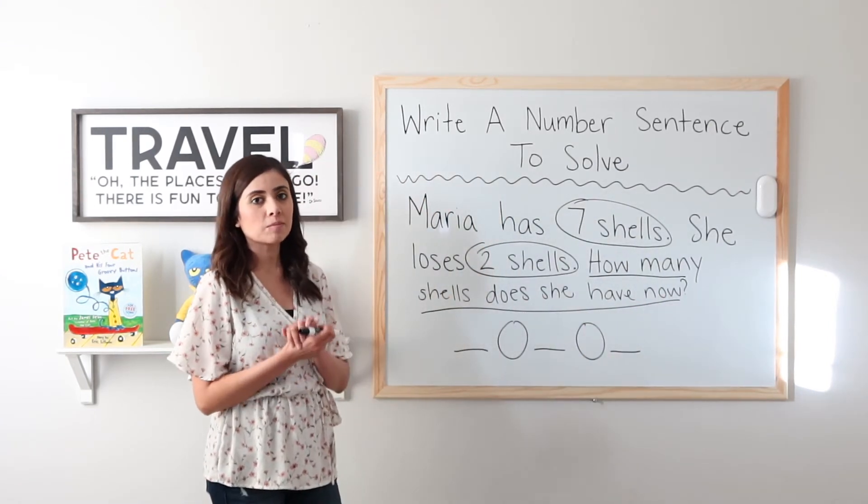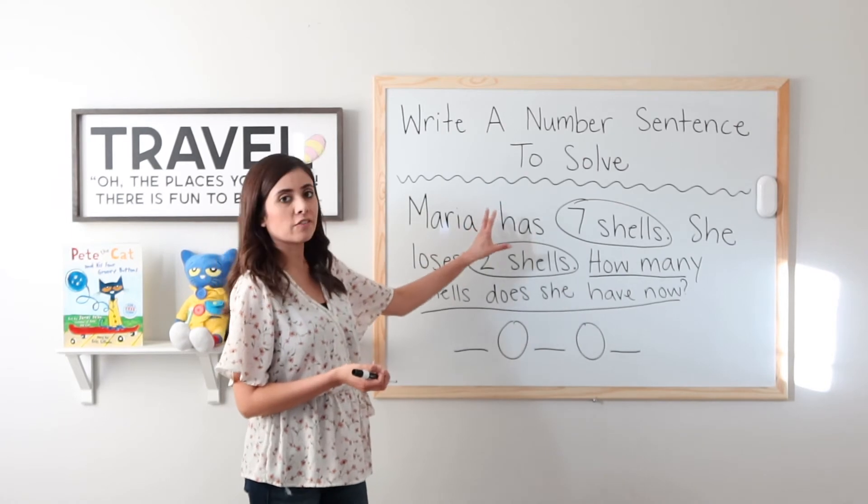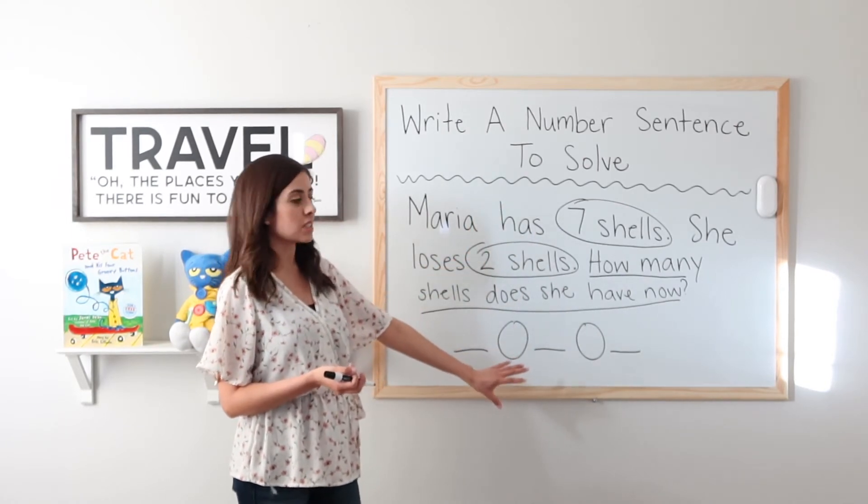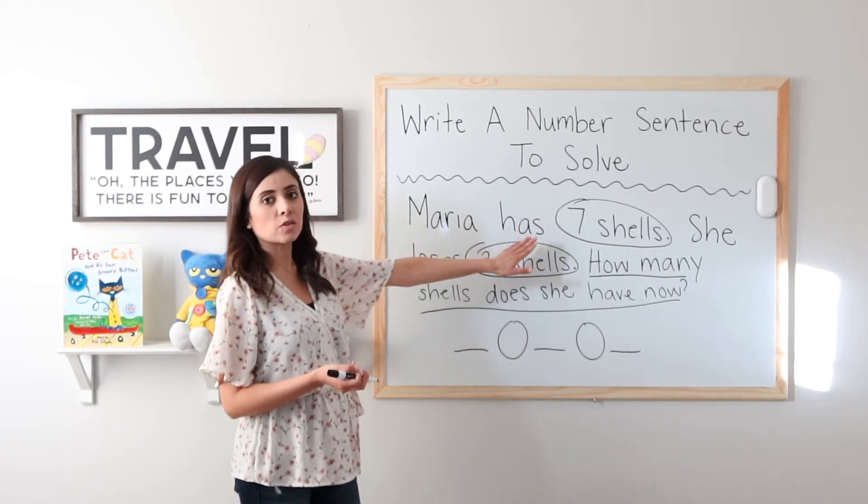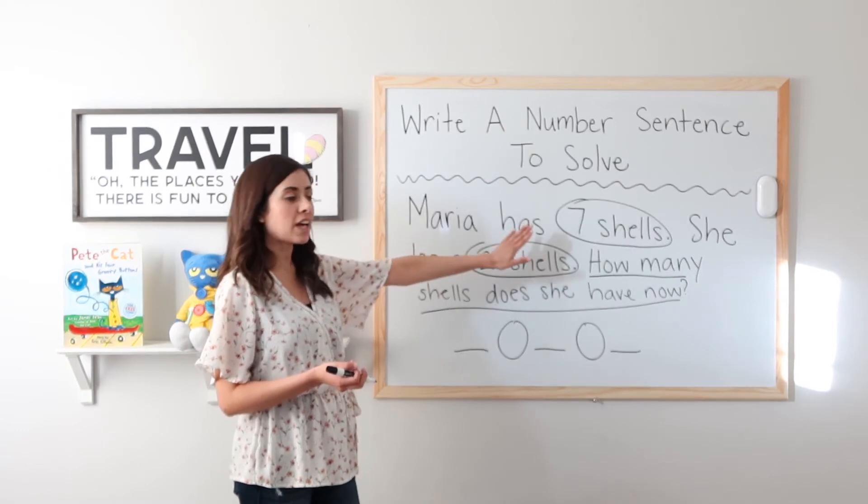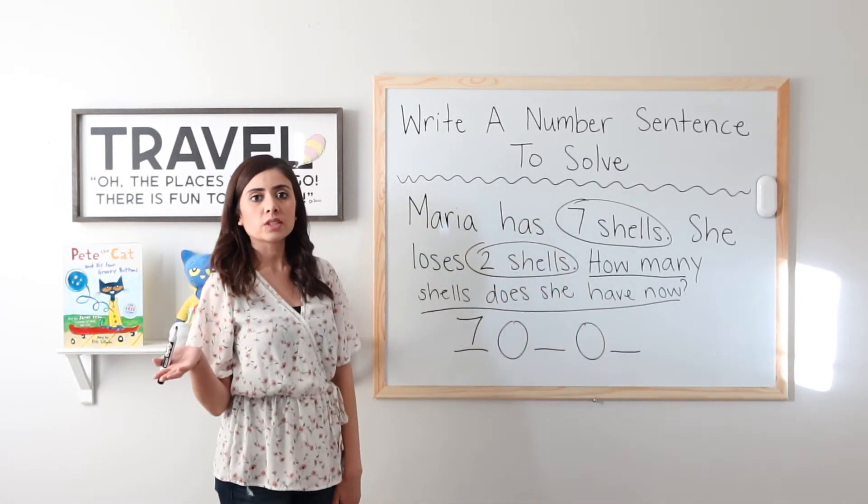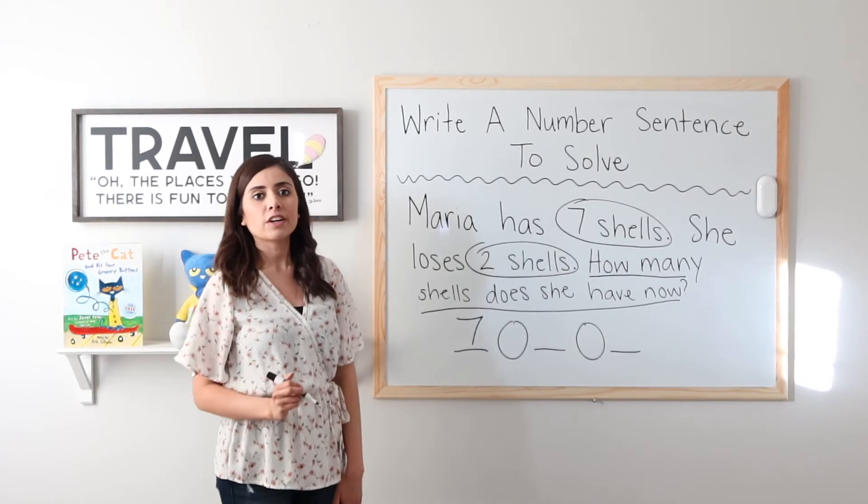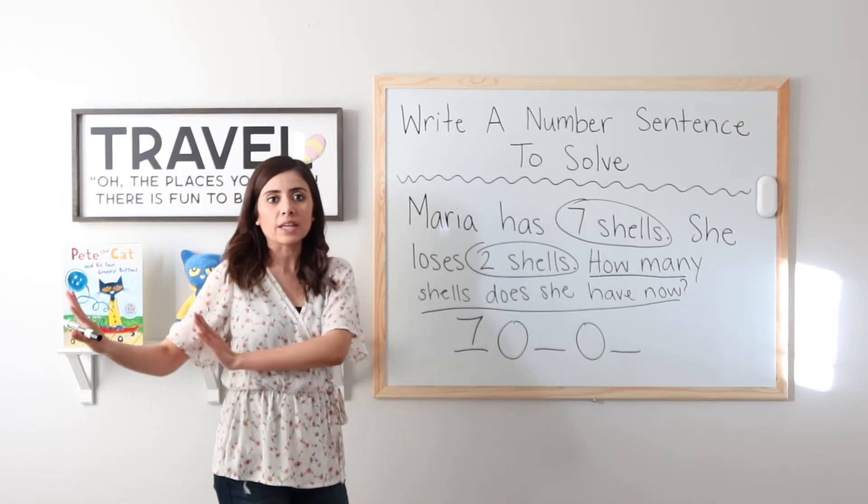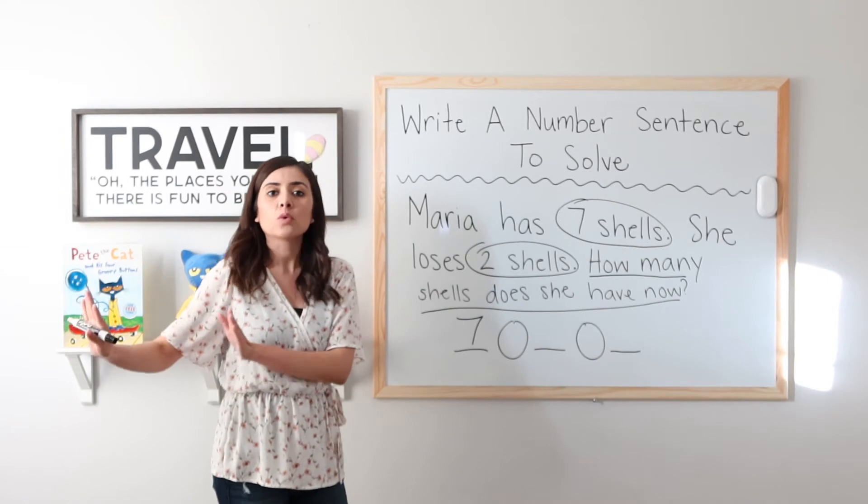Now that we have these steps completed, we are going to fill in our information in our number sentence. I know that Maria started with how many shells? Seven. How many did she lose? Two. Very good. So two went away. When something goes away, we subtract.